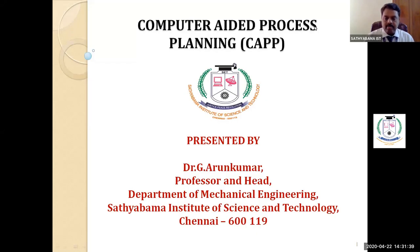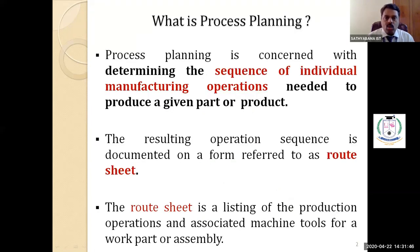Process Planning and CAPP. So let us start with what is process planning? Process planning is concerned with determination of sequence of individual manufacturing operations needed to produce a given part or product. Normally, the sequence of manufacturing or production operations can be documented in the form of a route sheet.